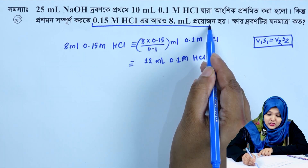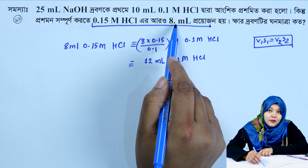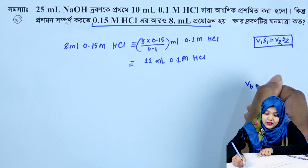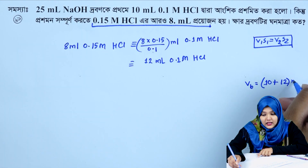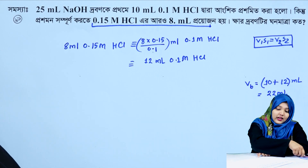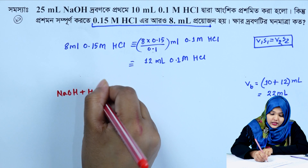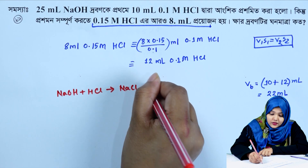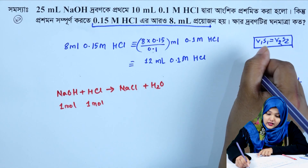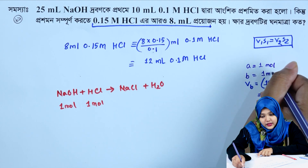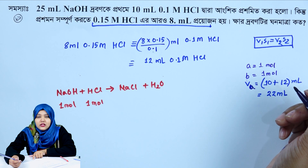When I compare 0.15 molar acid and 0.1 molar acid, I get 12 ml. The total volume is 10 plus 12 equals 22 ml. VB is equal to 1 mole. Acid is equal to 10 plus 12, which is 22 milliliter. Va is equal to 22 milliliter.